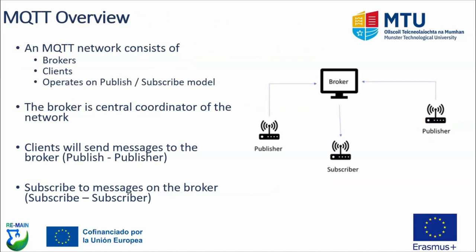An MQTT network generally consists of two components: the broker and the client. The broker is the central coordinator of the network, sitting in the middle — you can't have an MQTT network without a broker, it acts as the server. Clients will pop up and send messages to the broker, and subscribers, which are another type of client, will receive messages from the broker. Clients never talk directly to each other; they only communicate through the broker.